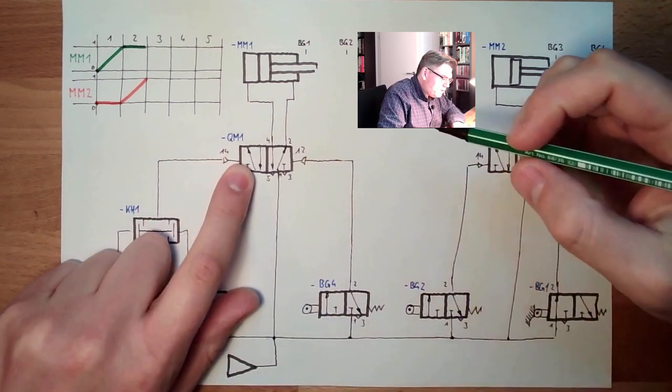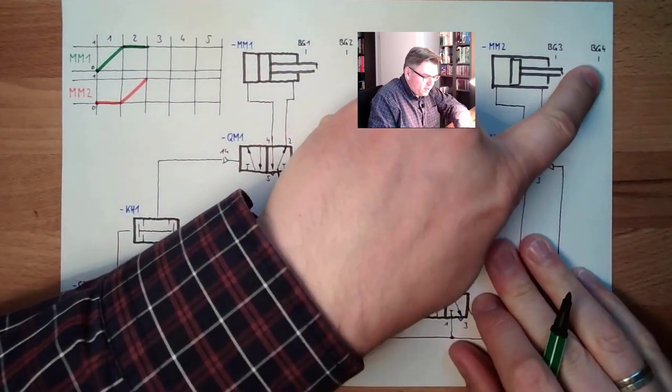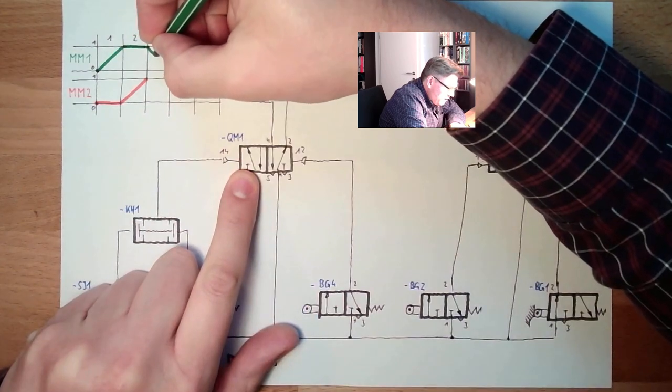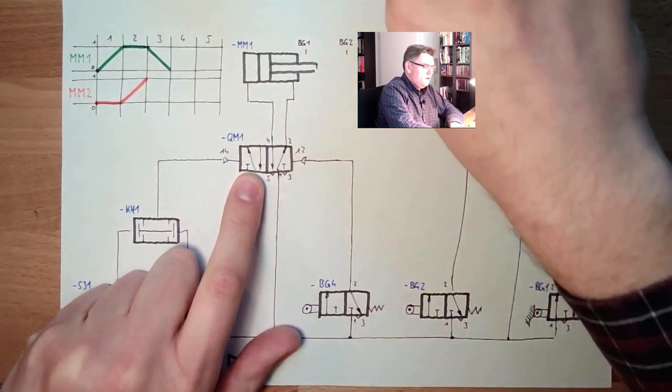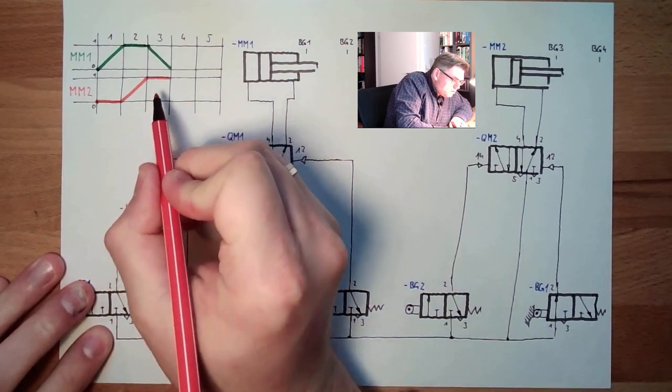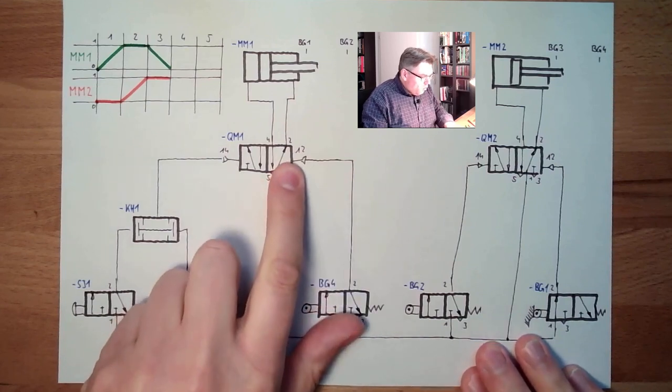Now PG4 is operated, this is pressureless and this will switch back. So in the third step, after MM2 has operated PG4, this will switch and MM1 is traveling inside. MM2, nothing will happen, will stay out.